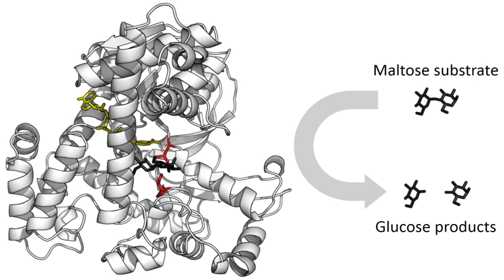In 1958, Daniel Koshland suggested a modification to the Lock and Key model. Since enzymes are rather flexible structures, the active site is continuously reshaped by interactions with the substrate as the substrate interacts with the enzyme. As a result, the substrate does not simply bind to a rigid active site; the amino acid side chains that make up the active site are molded into the precise positions that enable the enzyme to perform its catalytic function. In some cases, such as glycosidases, the substrate molecule also changes shape slightly as it enters the active site. The active site continues to change until the substrate is completely bound, at which point the final shape and charge distribution is determined. Induced fit may enhance the fidelity of molecular recognition in the presence of competition and noise via the conformational proofreading mechanism.